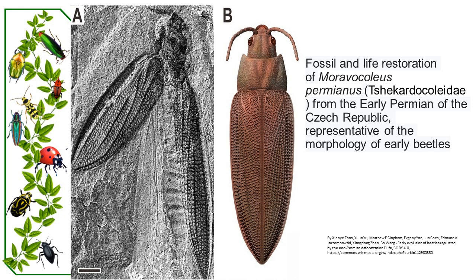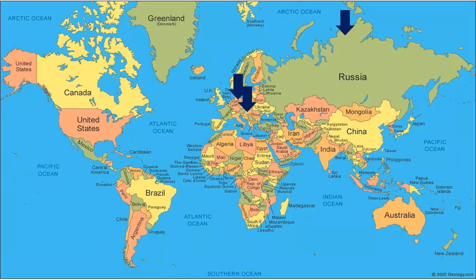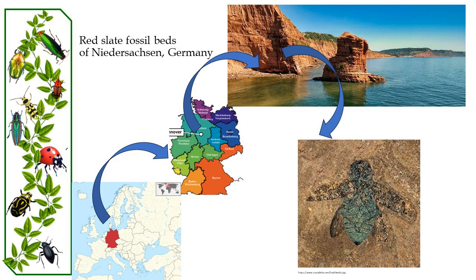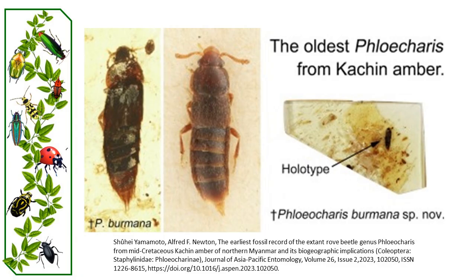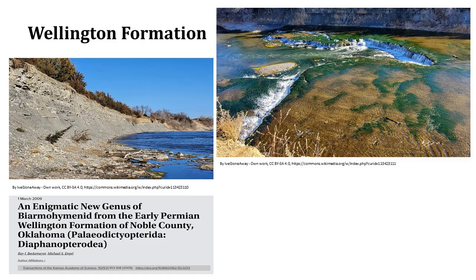Fossils from this period have been unearthed in various locations, including Siberia, Europe — such as the Red Slate Fossil Beds of Niederrochelle near Mainz, Germany — the Czech Republic, and the Ural Mountains in Russia. Despite the presumed connection between Asia and North America during the Permian, there is a scarcity of beetle fossils in North America before the Middle Permian. Notably, significant discoveries in North America were made in the Wellington formation of Oklahoma in 2005 and 2008.